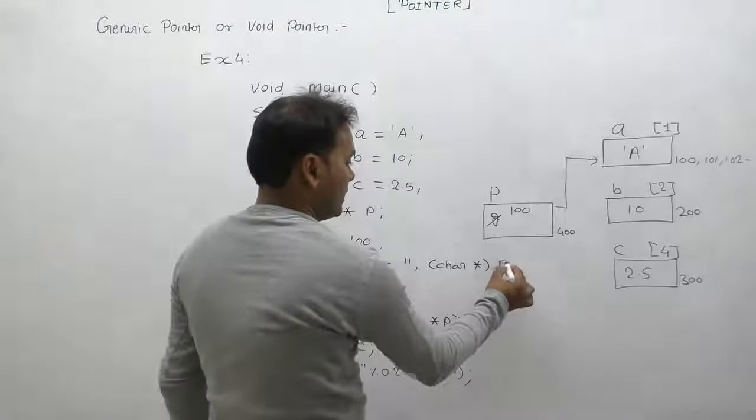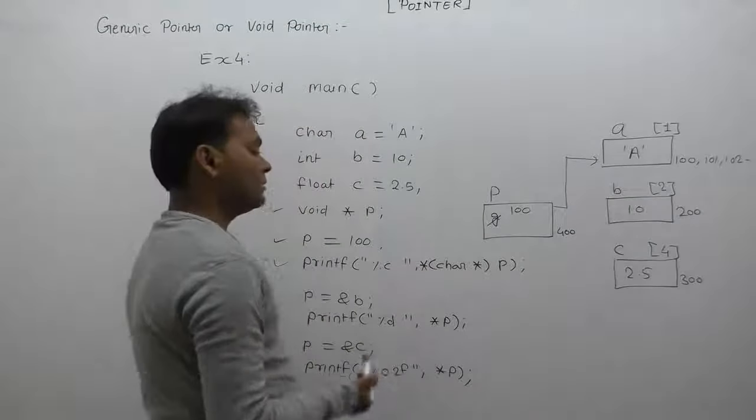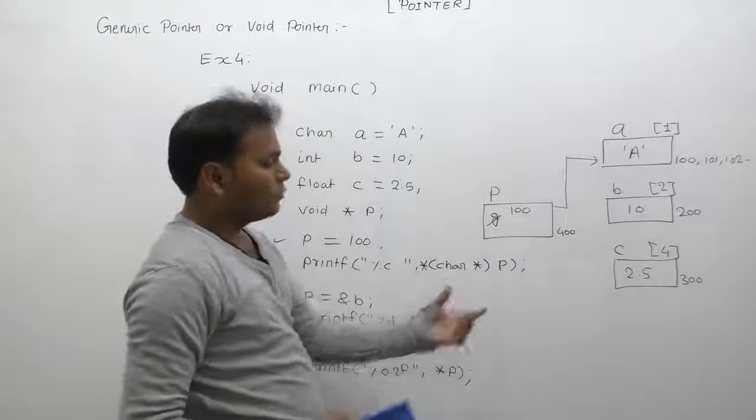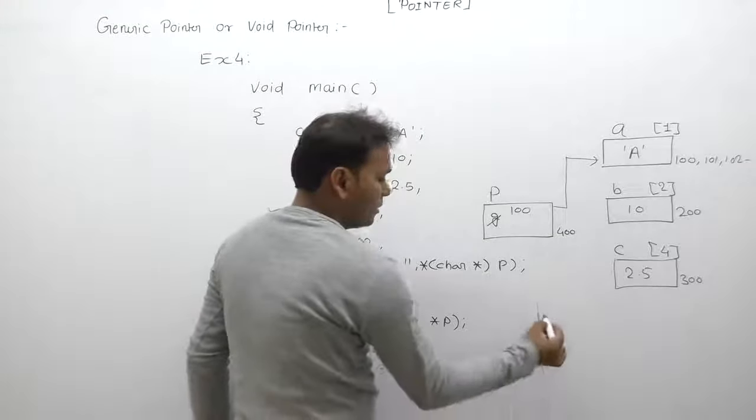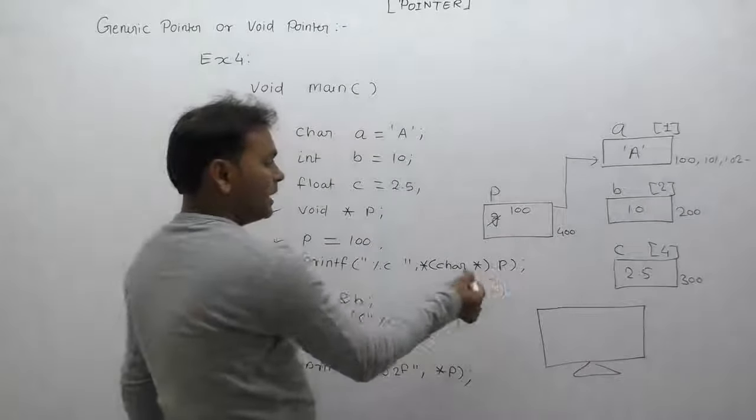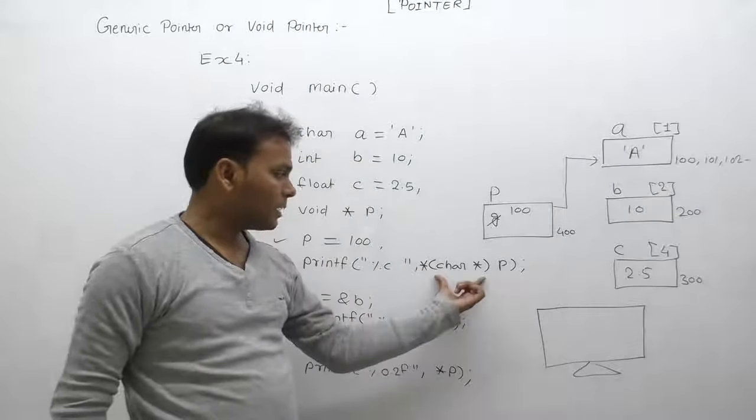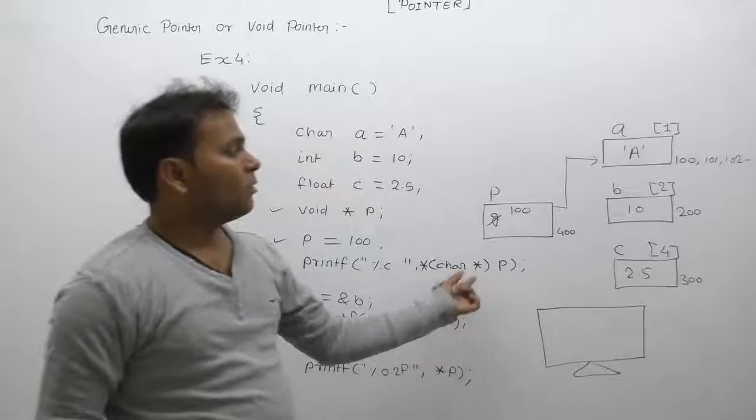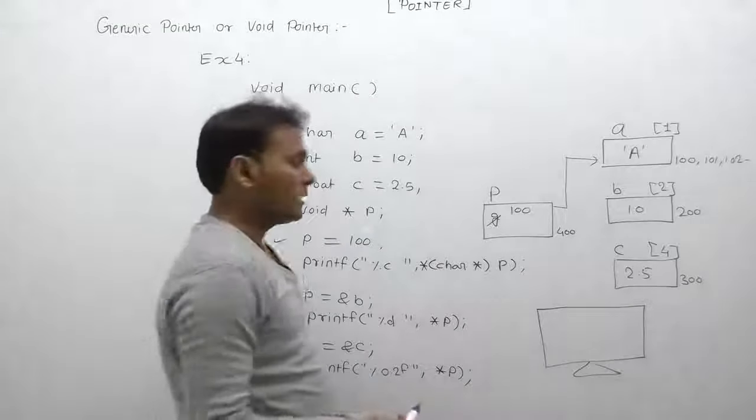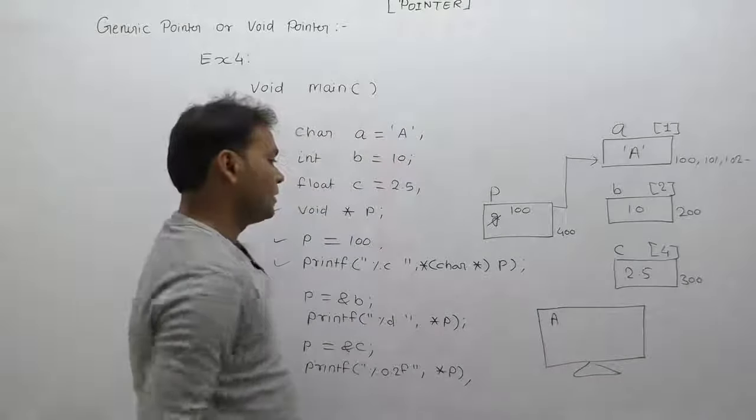Type casting is applied on p, then dereference operator star. It is a valid case. Physically in memory, no changes are performed internally. Only for compile time information, p's character type is considered. The dereference operator will be applied only for one byte from location 100 onwards. Only one byte is accessed, so it will display character A and space.